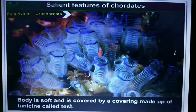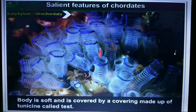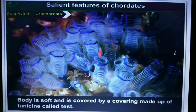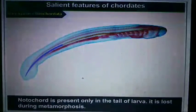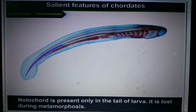In Urochordata, the body is soft and it is covered by a covering made up of tunicin. That is why it is called tunicates.